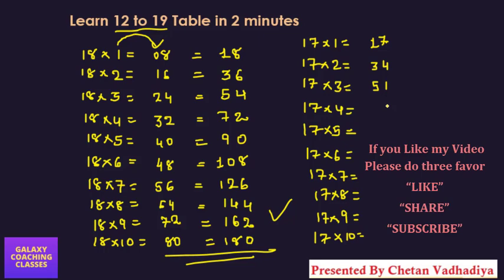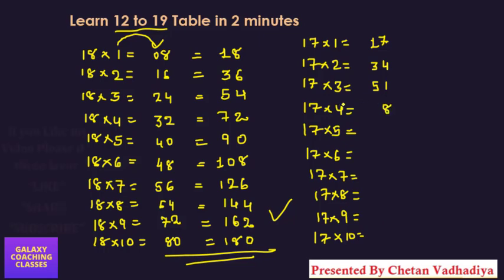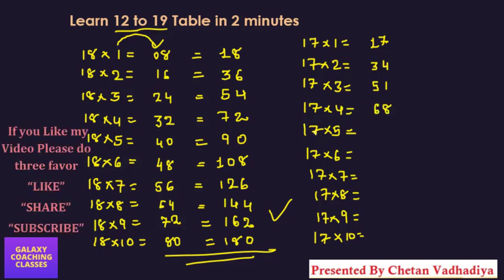Now 7×4=28, so 8 here, 2+4=6. Now 7×5=35, 3+5=8. Now 7×6=42, and 4+6=10.